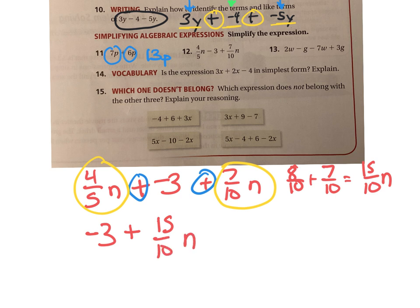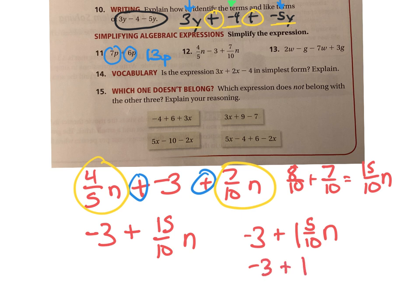That's not quite in the simplest form. 15 over 10 is improper, so I'd like to convert it to a mixed number. It could be negative 3 plus 1 and 5 tenths n, or negative 3 plus 1 and 1 half n — and there's your simplest expression.